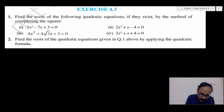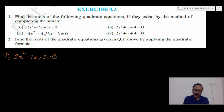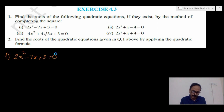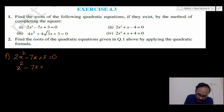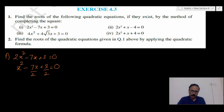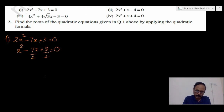The first question is 2x² minus 7x plus 3 is equal to 0. To complete the square, it is better to always have the coefficient of x² be 1. So by taking 2 as common and dividing both sides by 2, we get x² minus 7/2 x plus 3/2 is equal to 0.